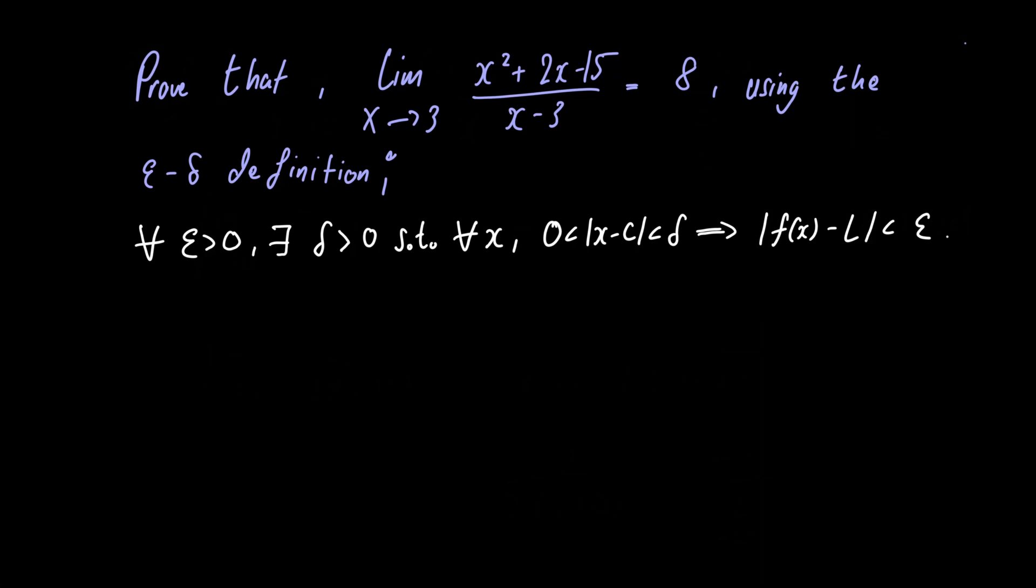Hi everyone, in this video we're going to prove that the limit as x approaches 3 of x squared plus 2x minus 15 divided by x minus 3 is equal to 8 using the epsilon delta definition which we have written right here.